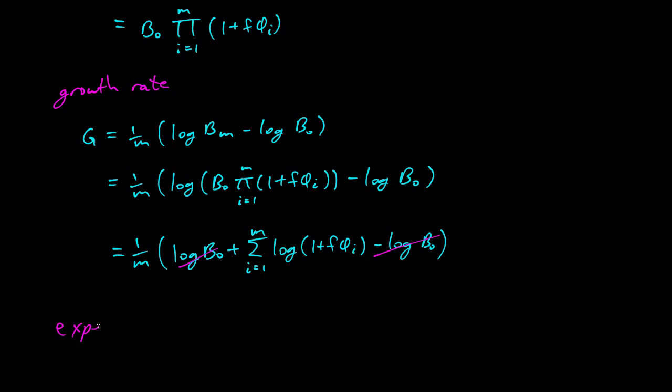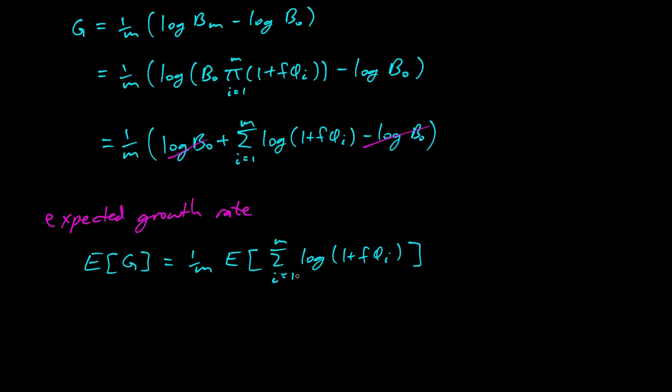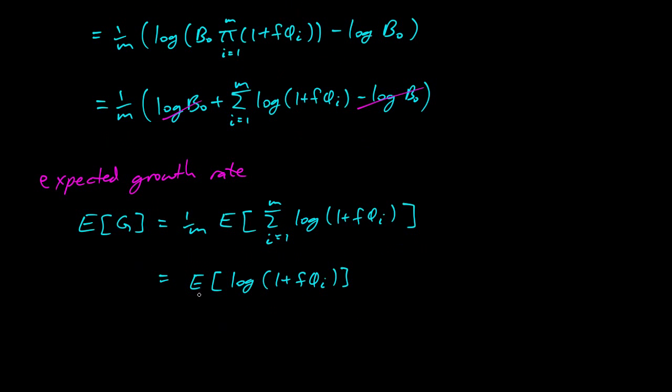So we have our growth rate. Now let's look at expected growth rate. So here, if we actually have all the φᵢ's, we can figure out the growth rate. But we actually have the statistical properties, not the actual values. So we want the expected value of G. That's going to be 1 over M times the expected value of the sum of i equals 1 to M of the logs. And so there are M terms here, and they're all drawn from the same distribution. So we can actually simplify this a little bit and take this M out. And that's just equal to the expected value of the log.